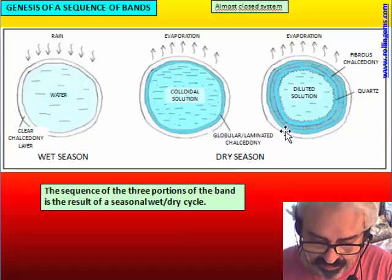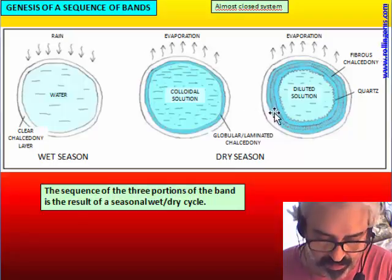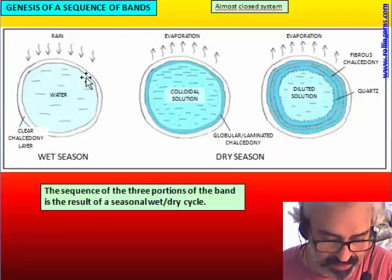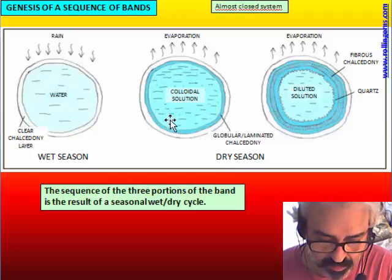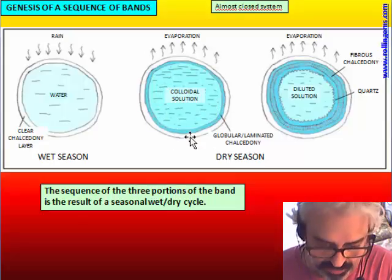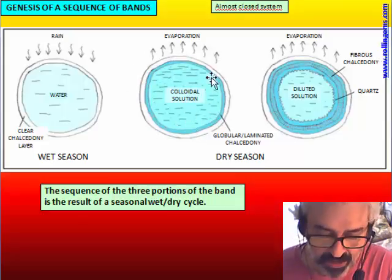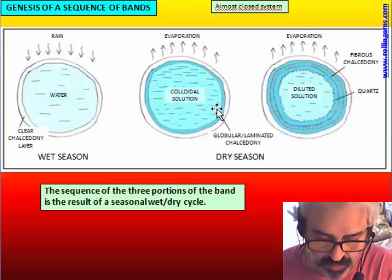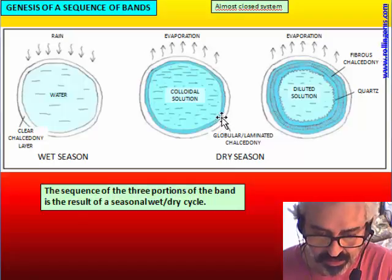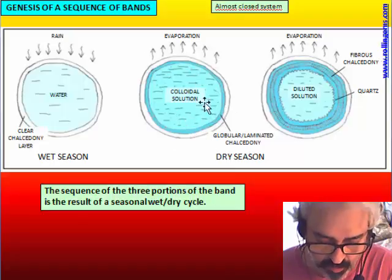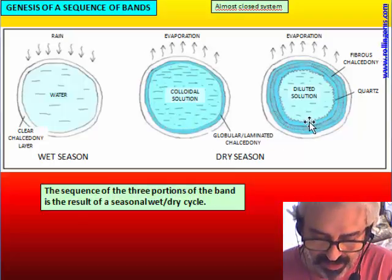We saw that the genesis of a sequence of bands — the three bands of globular chalcedony, fibrous chalcedony, and quartz — are the result of a seasonal wet-dry cycle. We have water entering inside the cavity, then evaporation transforms it into a colloidal solution. From the colloidal solution, a coating of sticky gel of chalcedony begins to separate — that is the globular chalcedony. Then the remaining solution, because silica is being extracted, becomes less colloidal, more diluted, and fibrous chalcedony starts to grow. At the end, when the solution is almost completely diluted, quartz starts to grow.